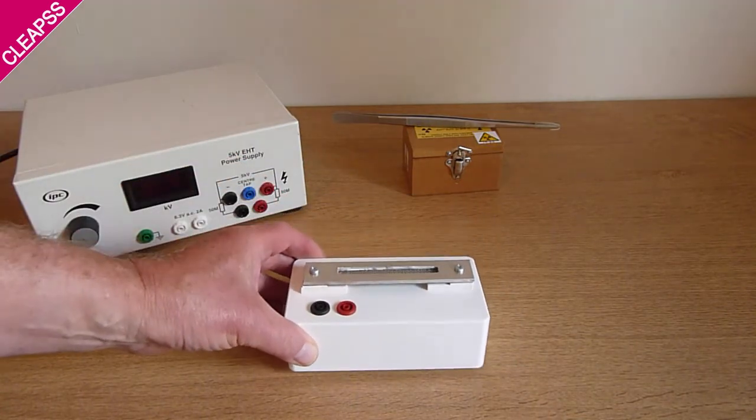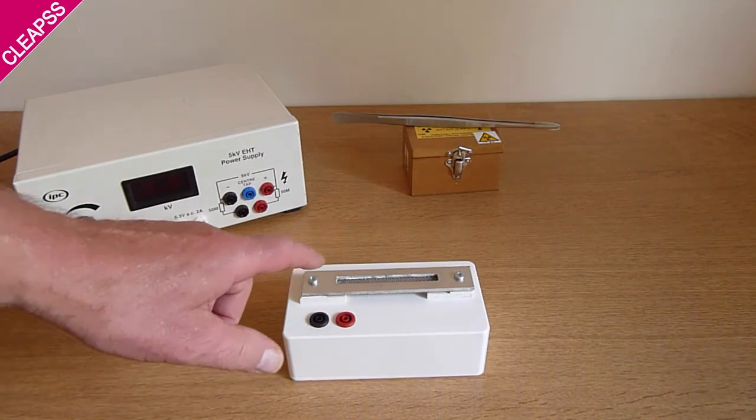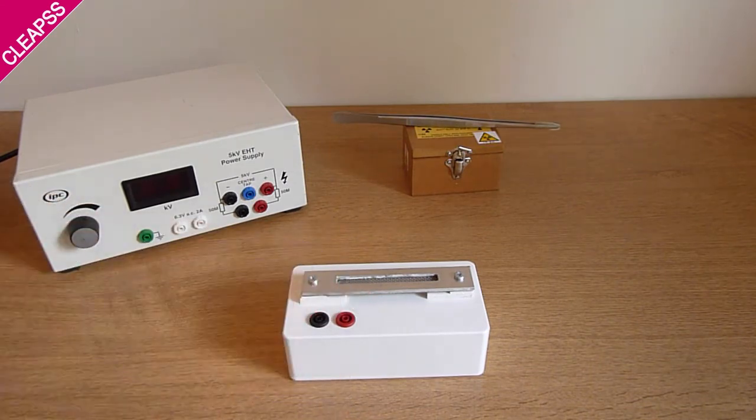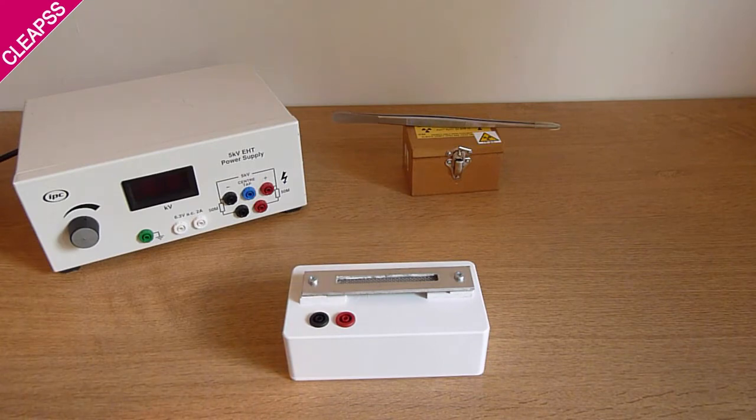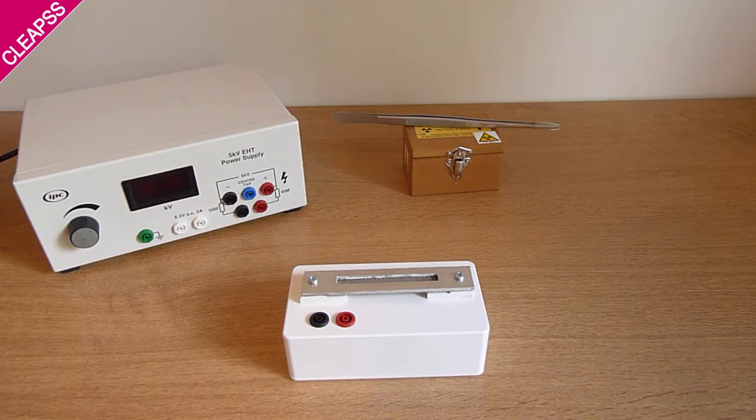I'm going to apply a high voltage, somewhere between three to five thousand volts, between the mesh and the wire. And when I bring the alpha source close, it will weakly ionise the air between the mesh and the thin wire and cause sparking.